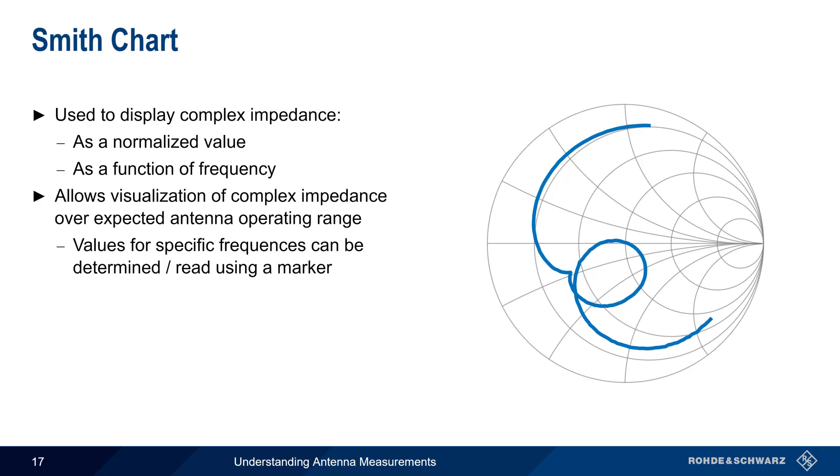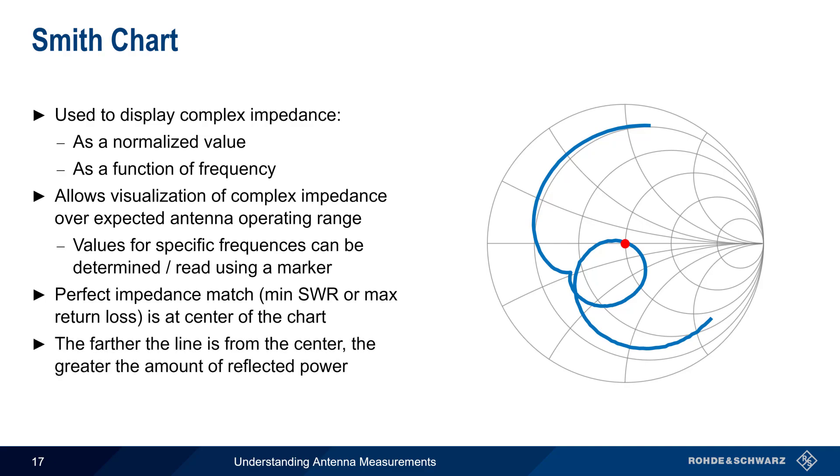Although we don't have time to go into detail on the Smith chart in this presentation, we can make two broad statements about measured values. First, the best impedance match, that is the minimum SWR or maximum return loss, occurs at the center of the Smith chart. And second, the farther the line or trace is from the center, the greater the amount of reflected power.